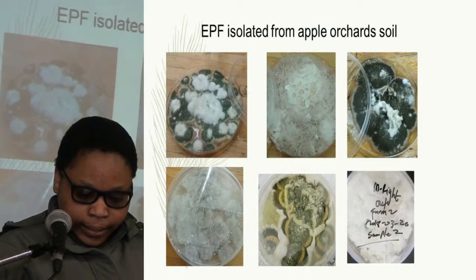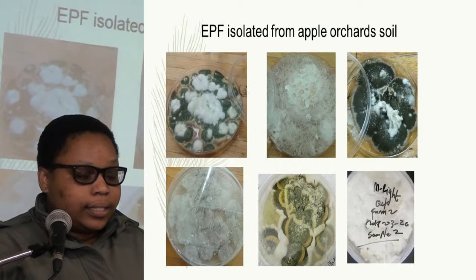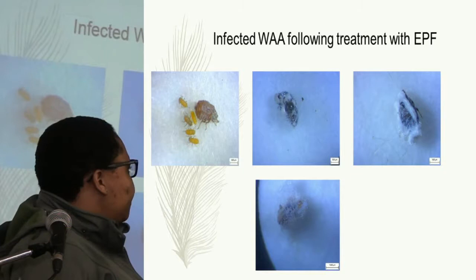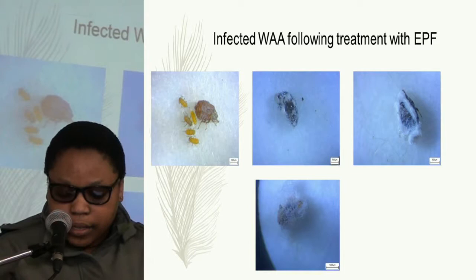From my survey of entomopathogenic fungi in apple orchards, I was able to collect six isolates of EPFs across six apple farms. This slide just shows the difference between a treated woolly apple aphid and one that has been exposed to treatment with entomopathogenic fungi.